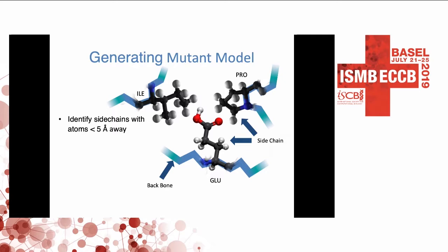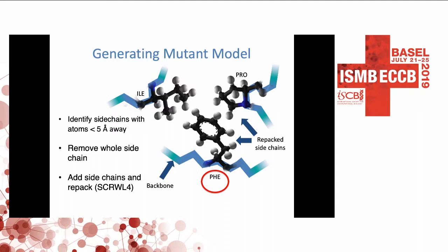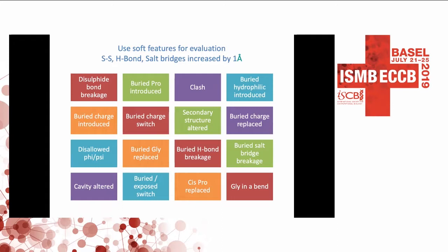We identify any side chains within five angstroms of this residue, remove those, remove the glutamate, then add them all back in and add in the new phenylalanine side chain at this position. The side chains are repacked using SCWRL4. We then have the wild-type and the variant structural environment around that variant, and we assess if they have any structural effects. Sixteen structural properties are considered, ranging from disulfide bond breakage, introduction of clashes, introduction of charges in buried regions, and so on. There is no machine learning — the method simply tells you if one of these features has been affected by the variant.